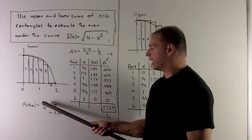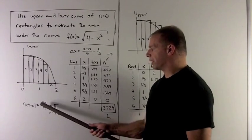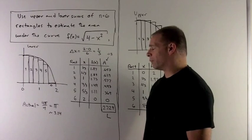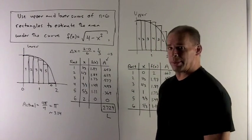We have pi r squared is the area. R is equal to 2, so we get 4 pi divided by 4, because we're only using a quarter of the circle, which gives me pi.